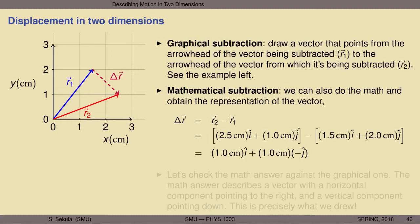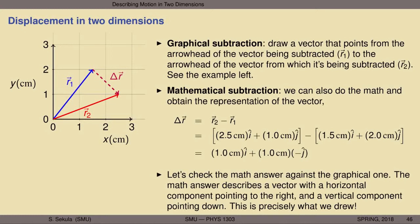So we have two answers: a graphical one and a mathematical one. The math answer describes a vector with a horizontal component pointing to the right and a vertical component pointing down — and that's exactly what our graphical delta r arrow does. It has a component pointing down and a component pointing right. You could additionally print this out and use a ruler to verify that the length of the vertical component equals the length of the horizontal component, confirming these answers are consistent even though we used two approaches.